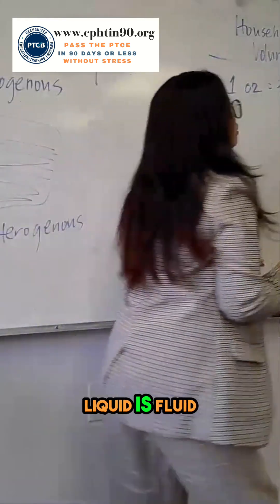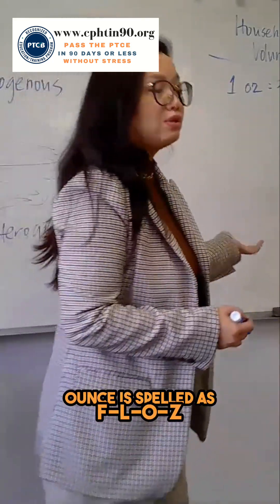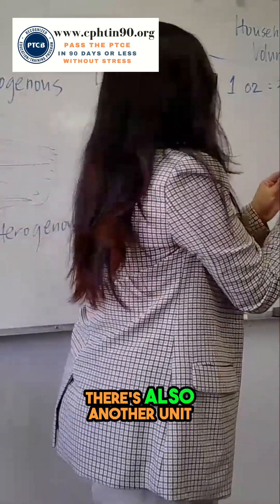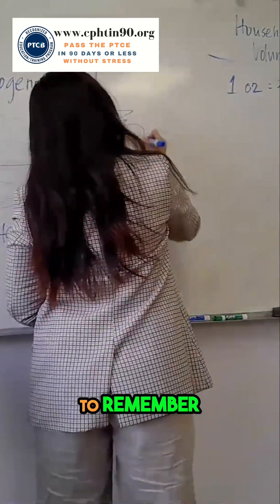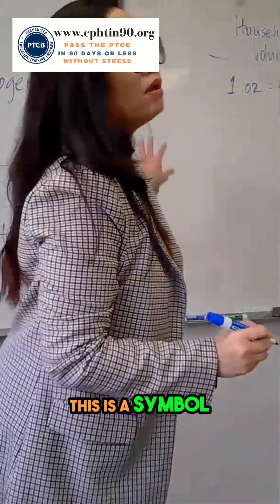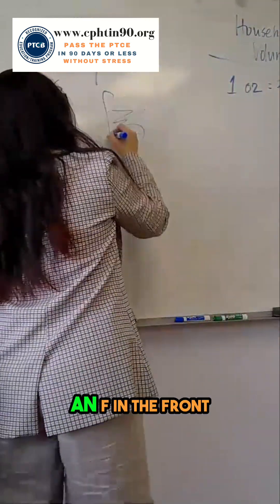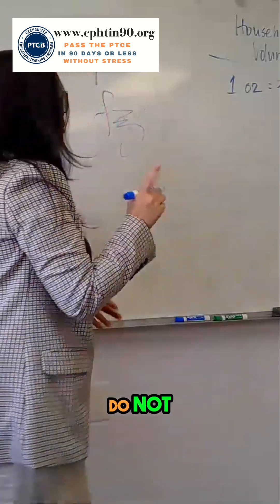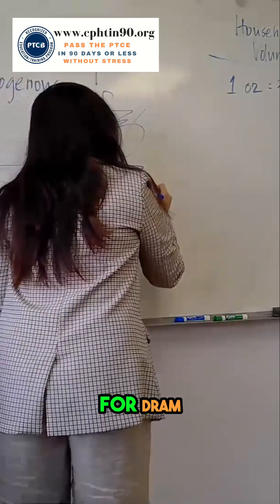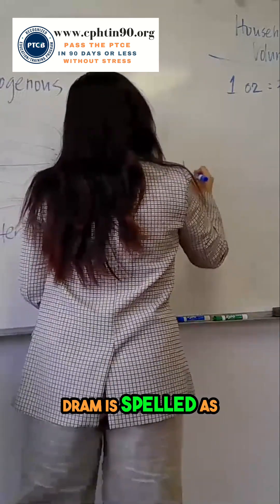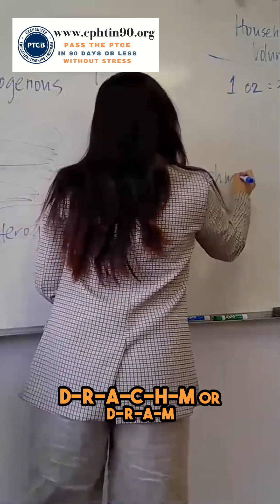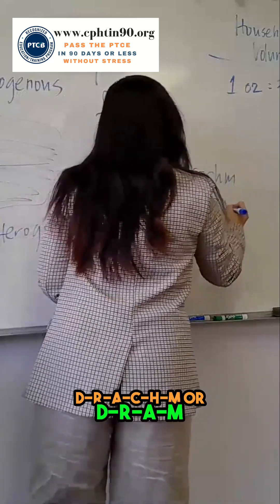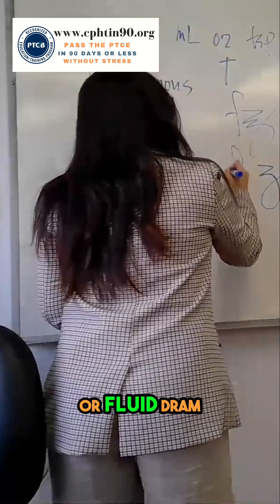Technically, liquid is fluid ounces, spelled as F-L-O-Z. There's also another unit that I want you to remember. This is a symbol for ounce. So if you put an F in the front, it's fluid ounces. Do not mistake this for DRAM. DRAM is spelled as D-R-A-C-H-M or D-R-A-M, or fluid DRAM.